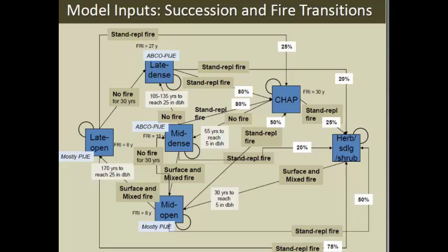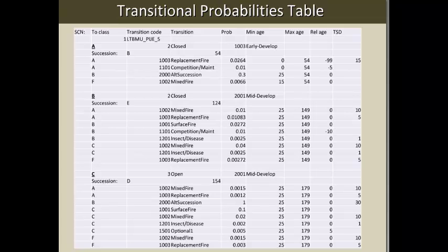This graphic from VDDT shows, in the 'to class' column, the actual states with all the successional pathways leading from each state to other places. It gives you a code for how the model runs, a name, and the transition timing — for example, state A succeeds to state B after 54 years on average if nothing else happens. Below that you can have stand replacement fire, mixed severity fire, competition effects, or alternate succession, with rule sets for minimum age, maximum age, and what happens to stand age when those transitions occur.